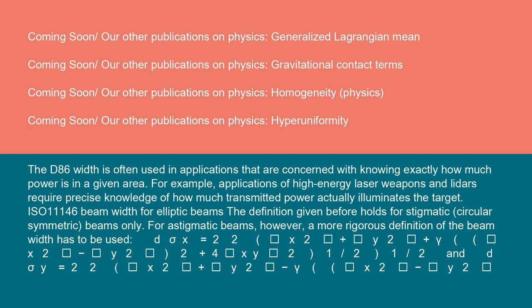The D86 width is often used in applications that are concerned with knowing exactly how much power is in a given area. For example, applications of high-energy laser weapons and LIDARs require precise knowledge of how much transmitted power actually illuminates the target.